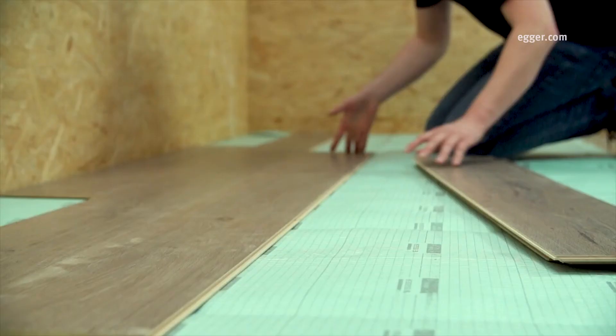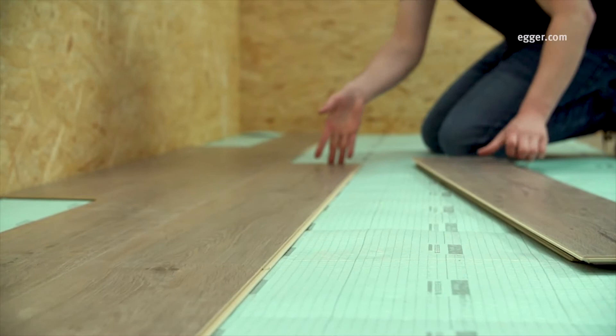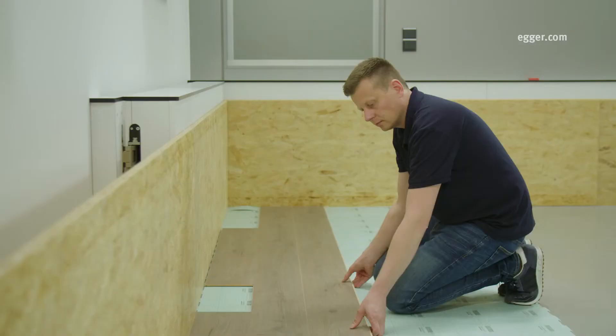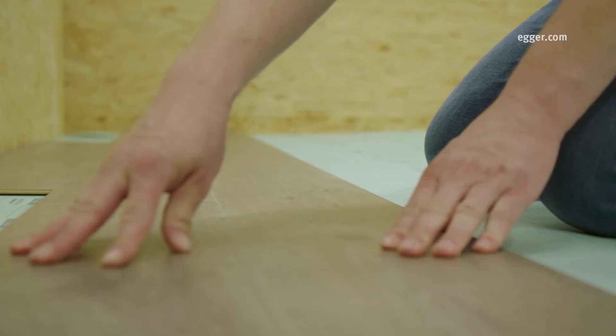The floorboards in the second row are at first only angled laterally and are only placed loosely on the groove. Finally, the second row is angled lengthwise and connected with the first row.